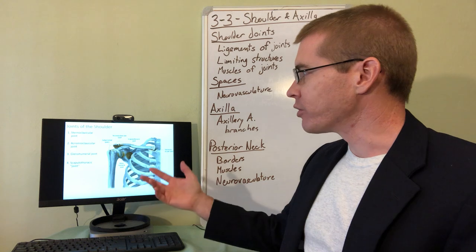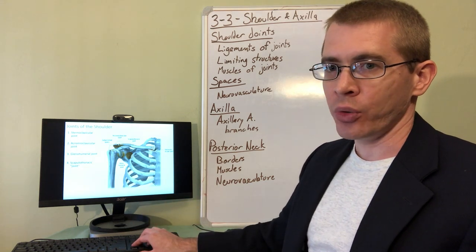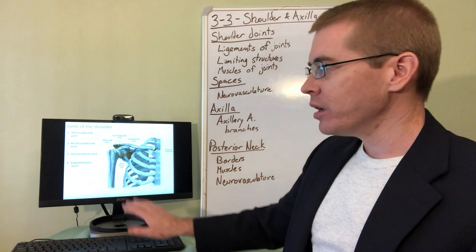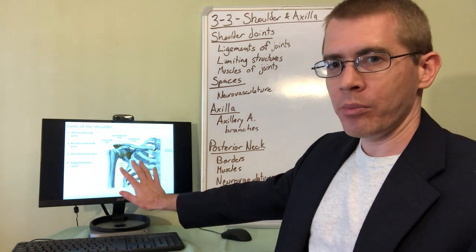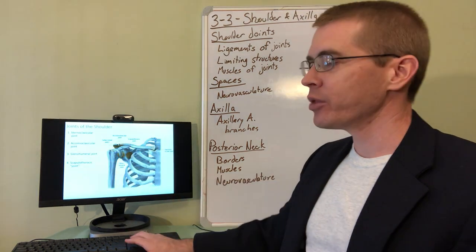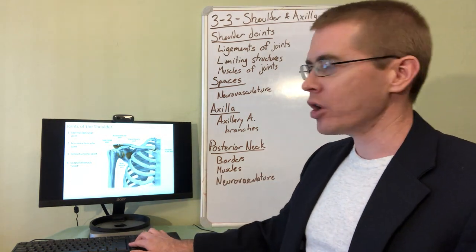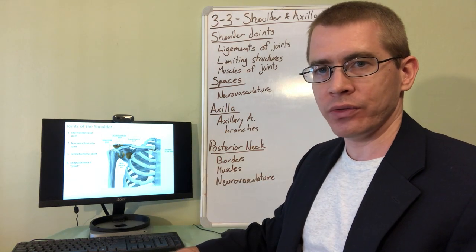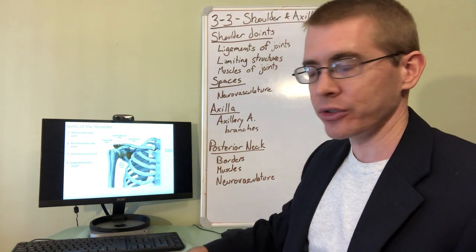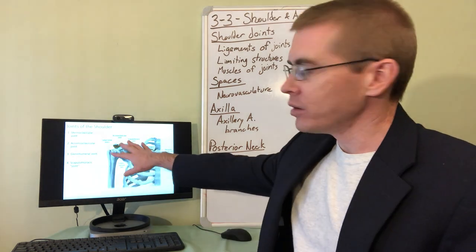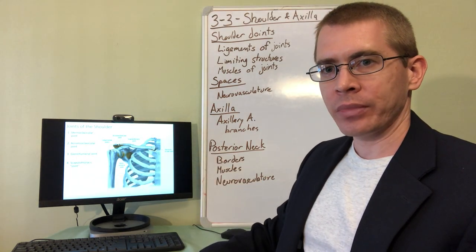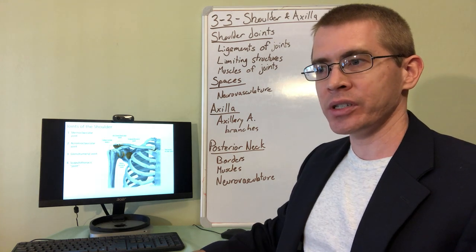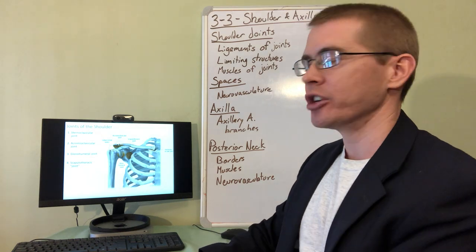There's also the acromioclavicular joint and the scapulothoracic joint. The scapulothoracic joint isn't actually a joint, it's a fascial plane between the scapula and the thorax. So I hope you're already realizing that with your knowledge of osteology that you've been studying since that first lecture, that all of these joints are simply named after the bones or ridges or prominences and how they interact with each other.